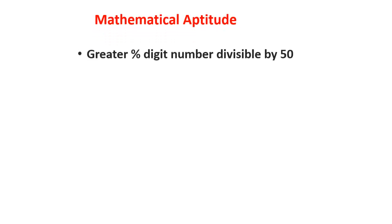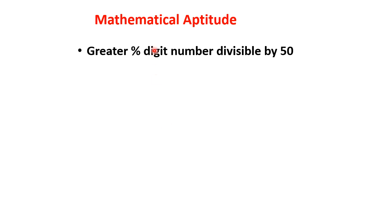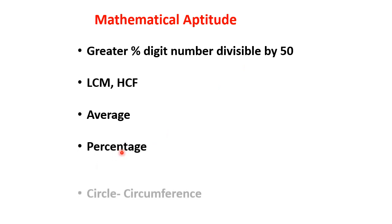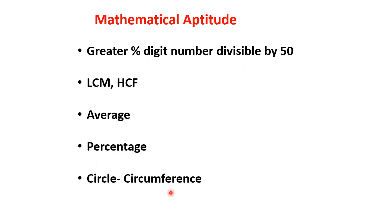Mathematical aptitude पे — greatest 5-digit number divisible by 50 वाला question था। LCM और HCF पर 2-3 questions थे, average पर questions थे, percentage पर questions थे, और circle के circumference से related questions थे।